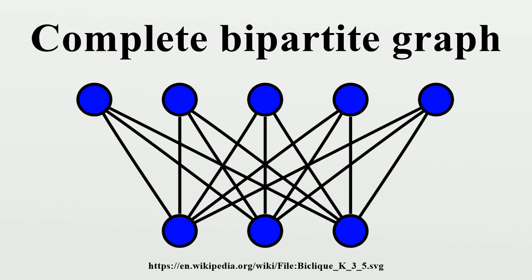The complete bipartite graph K(m,n) has a vertex covering number of min(m,n) and an edge covering number of max(m,n). The complete bipartite graph K(m,n) has a maximum independent set of size max(m,n).